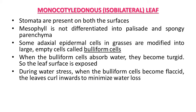Now, the anatomy of monocot leaf. It is also known as an isobilateral leaf because on both sides they possess a similar kind of structure. In a typical monocot leaf, stomata are present on both surfaces, mostly equally distributed. Unlike the dicot leaf, the mesophyll is not differentiated into palisade and spongy parenchyma.